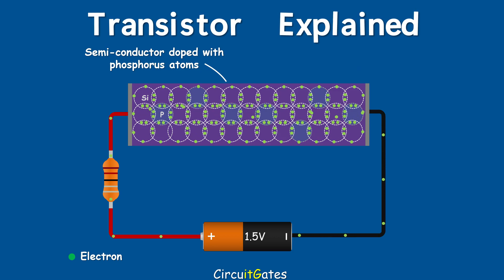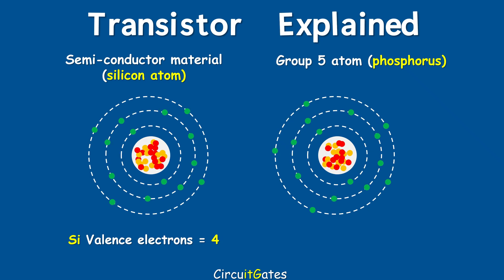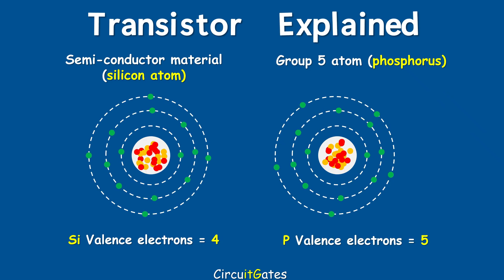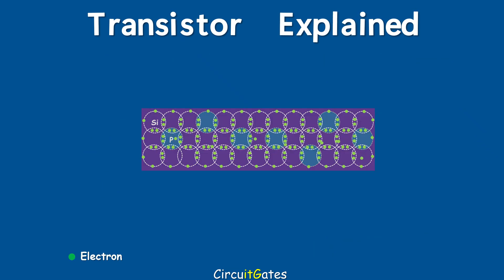Semiconductor material has 4 valence electrons, or outermost electrons, while phosphorus atoms have 5 valence electrons. After doping, covalent bonding occurs, leaving each phosphorus atom with an unbonded electron. This electron is free and will cause conduction in the semiconductor material.